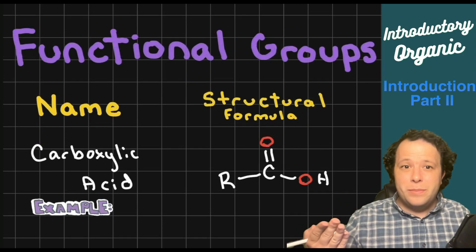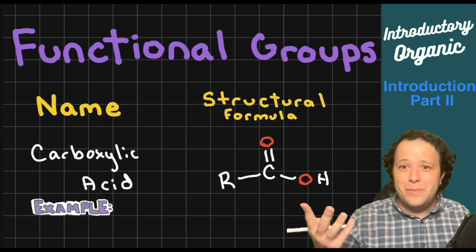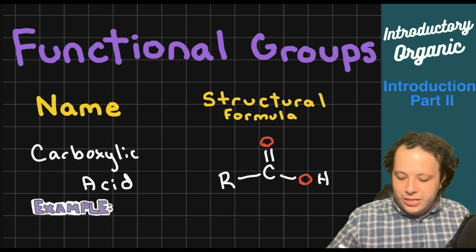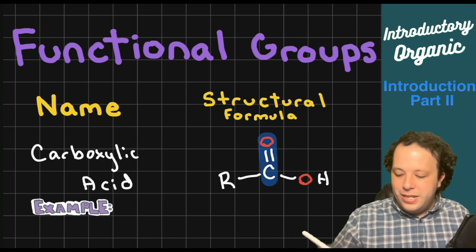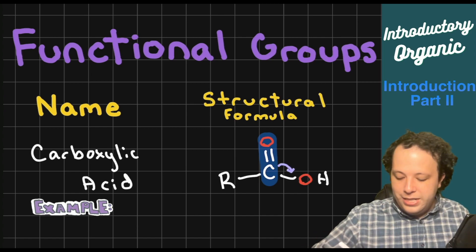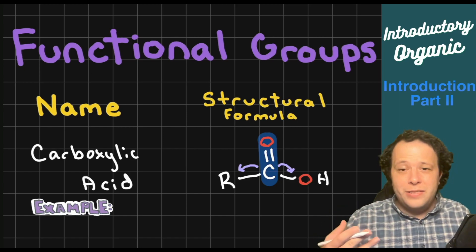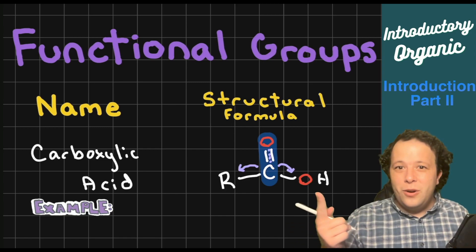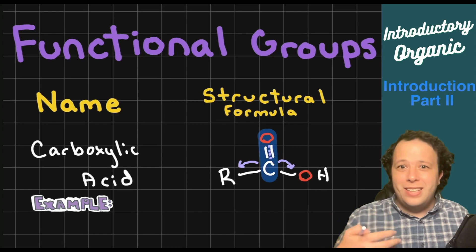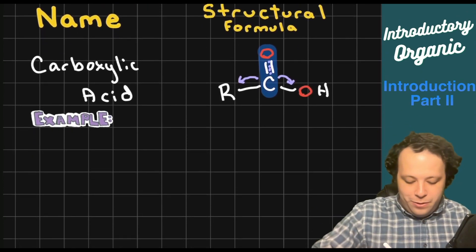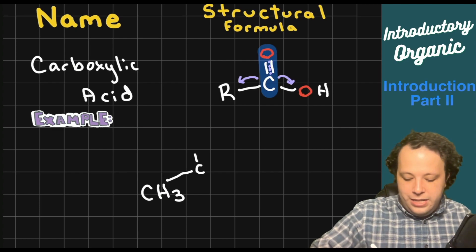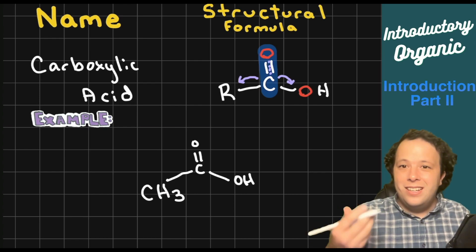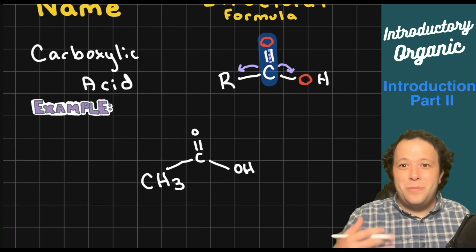Carboxylic acids have two different functional groups on the same carbon: C=O and also an OH. Whenever you have a C=O, look on both sides of the carbon — like crossing the street, look both ways. The OH here is your acidic property, responsible for the tartness in lemons or oranges. A common example is CH₃–C(=O)–OH, which is acetic acid, also known as vinegar. This group also must be on the end of a chain.